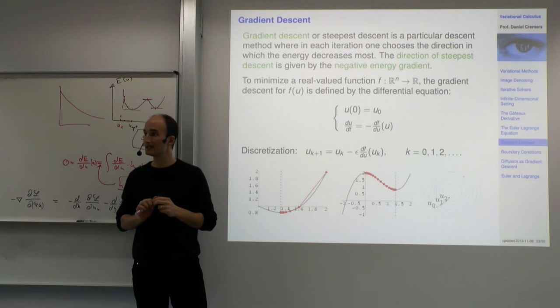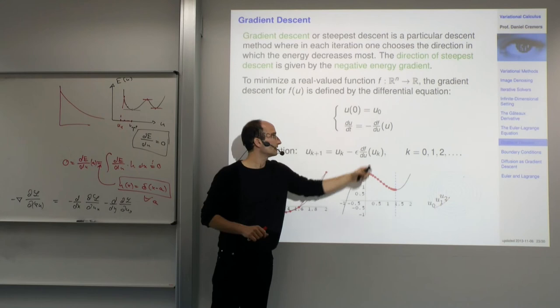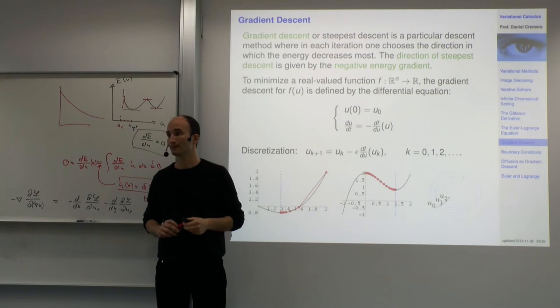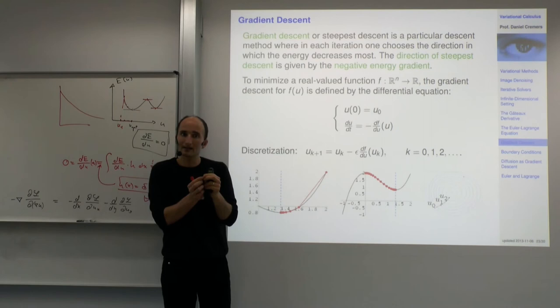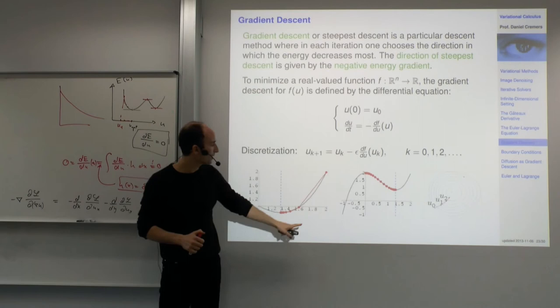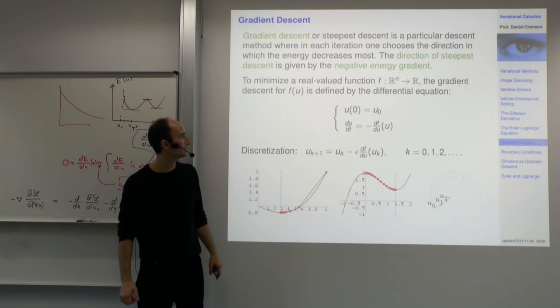This is called gradient descent or steepest descent: initialize u at time zero with u_0, then evolve it so that du by dt equals minus df by du. In the discrete version with step size epsilon, you get u^(k+1) = u^k minus epsilon times df by du. Starting somewhere, step by step you go downhill.